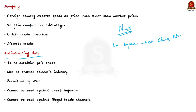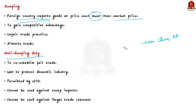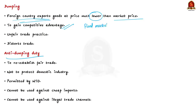Dumping occurs when a foreign country exports a good to another country but the price of that good is much lower than its market value. Dumping is usually done with the intention of obtaining a competitive advantage in the importing market. In our case, China and other countries are flooding the Indian market with cheap vinyl tiles. This is an unfair trade practice with a destructive effect on international trade.